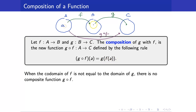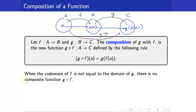Meaning to say, we get our a, get its image under f, and then get the image of f of a under the function g — that's g of f of a. Take note that when the codomain of f is not equal to the domain of g, then there is no composite function g circle f.